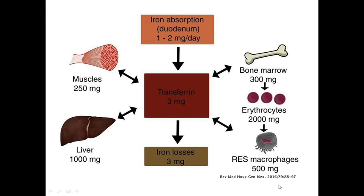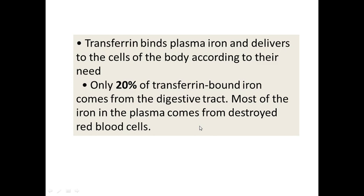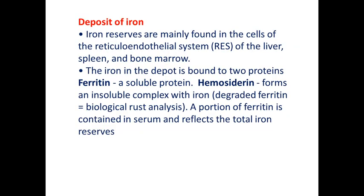After destruction of erythrocytes, transferrin also takes up the released iron and carries it to the bone marrow, spleen, liver, and other tissues. Transferrin binds plasma iron and delivers it to cells according to their need. Only 20% of transferrin-bound iron comes from the digestive tract; most of the iron in plasma comes from destroyed red blood cells. Iron reserves are mainly found in the liver, spleen, and bone marrow.